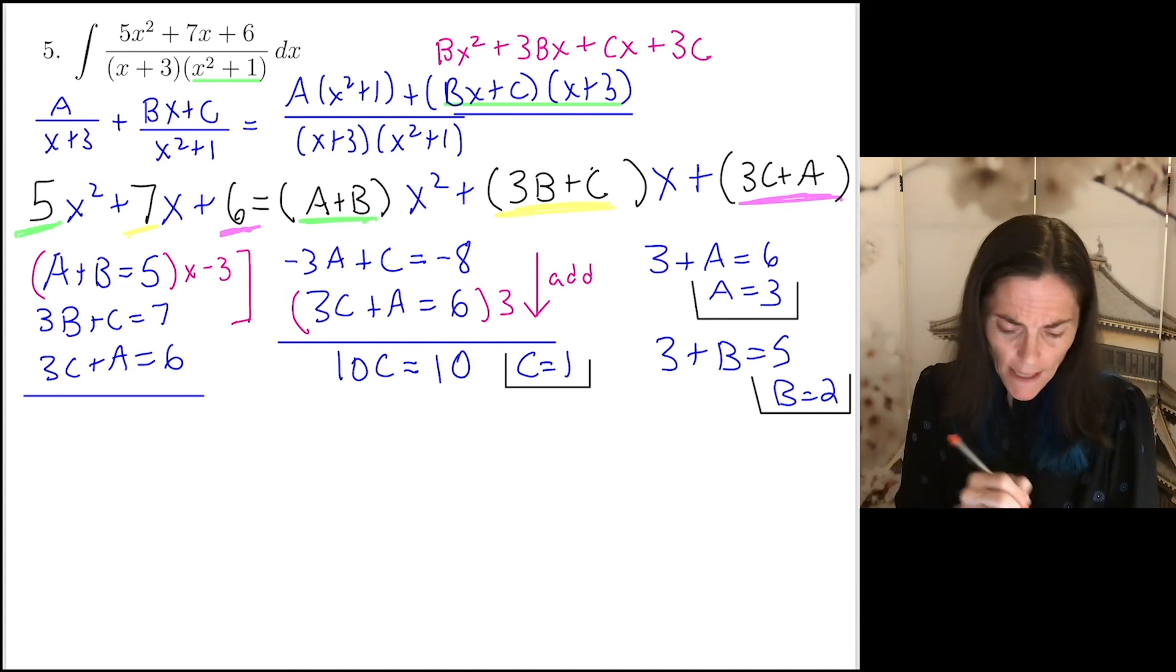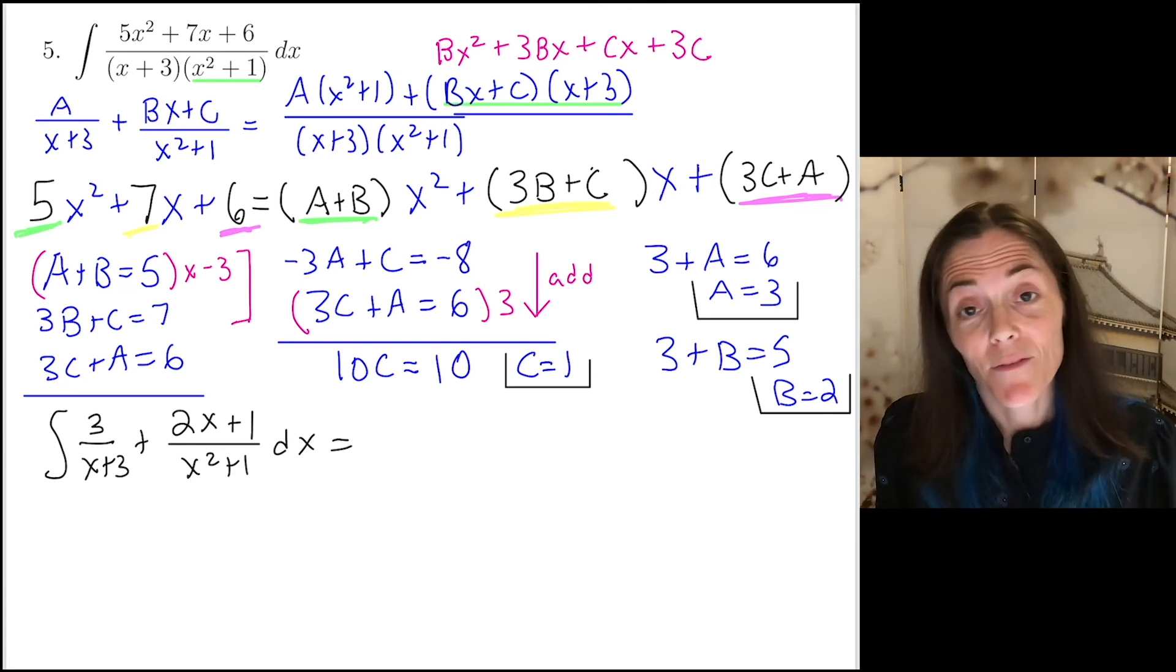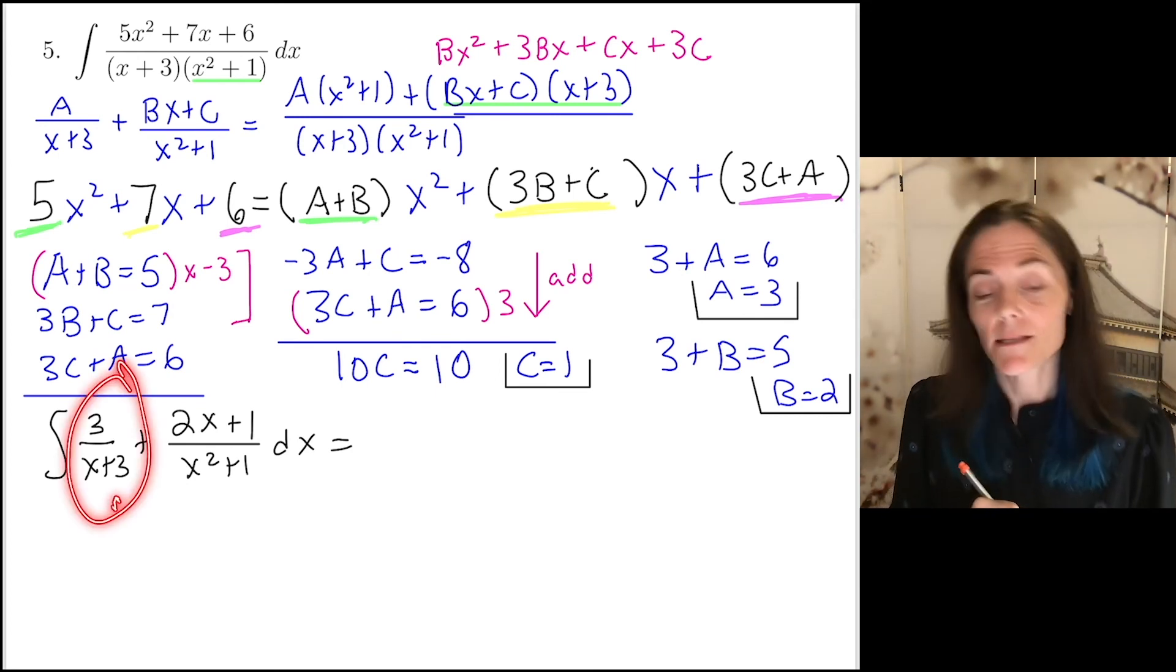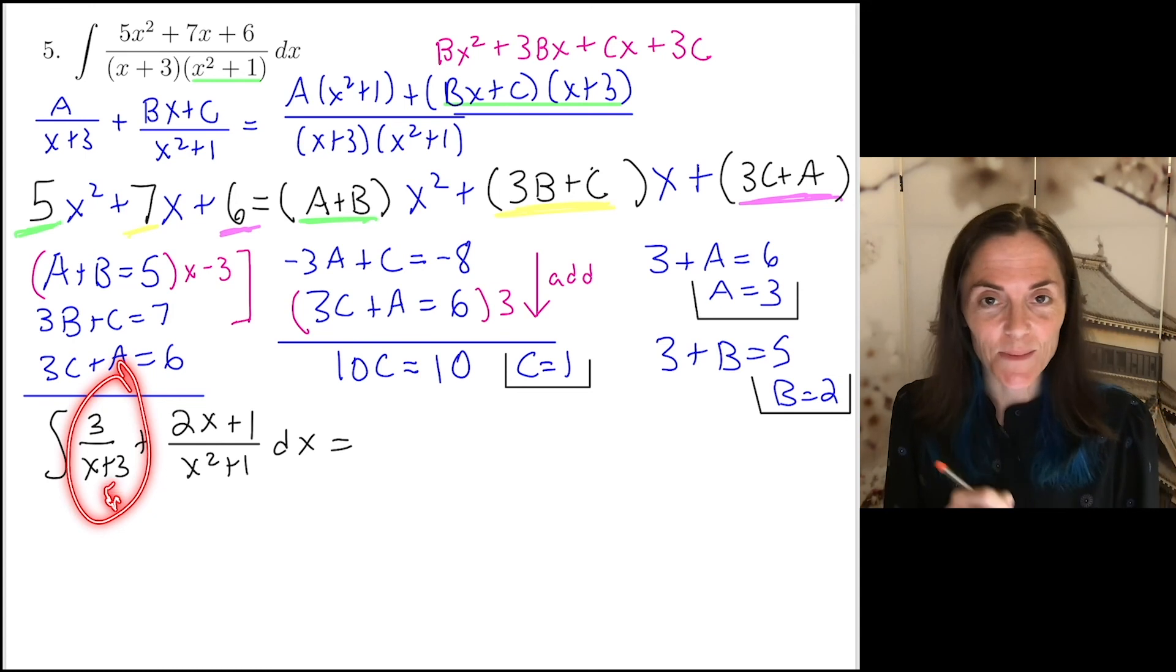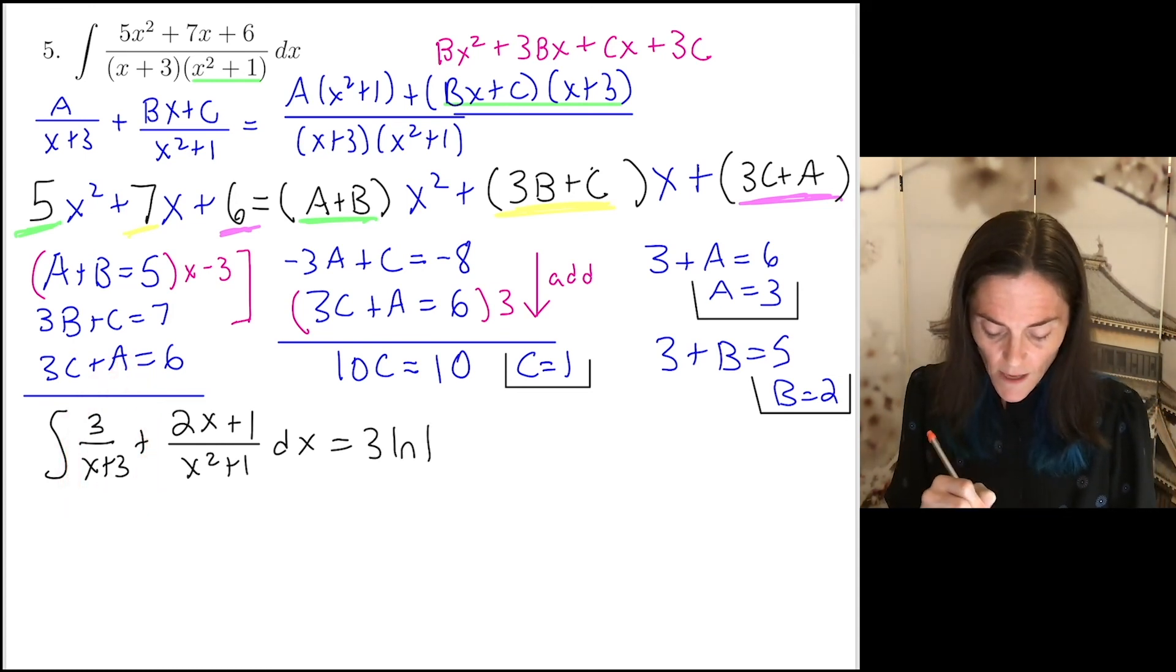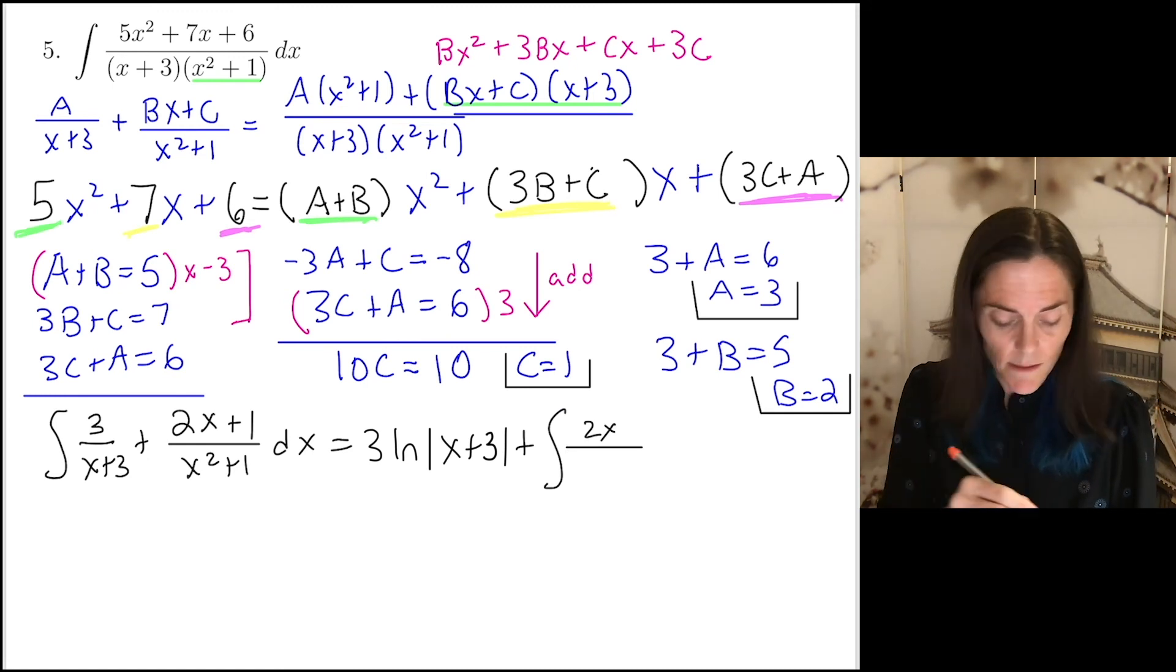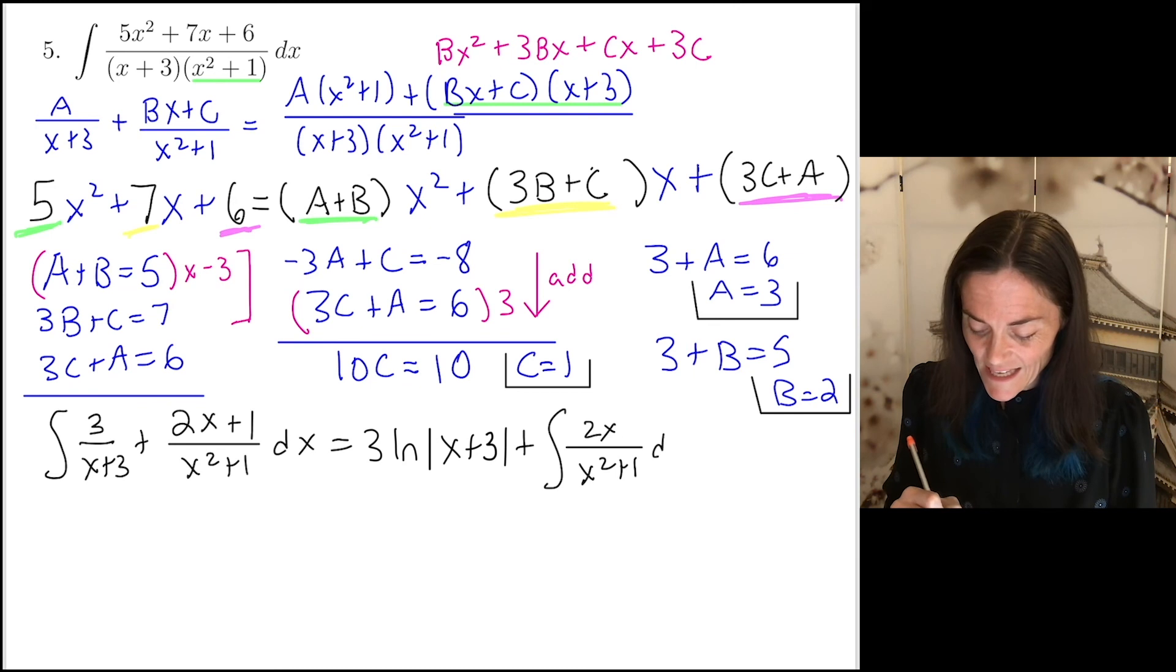So now we can integrate. We're ready. Maybe I'll switch to black for the integration. We have a over x plus 3 and then we have bx plus c over x squared plus 1, dx. Well, I will break this into a sum of three integrals. In fact, this first one, maybe I'll go ahead and integrate because this is just 3 times ln absolute value x plus 3. So we have 3 ln absolute value x plus 3. But then I will break this one into a sum. We have 2x over x squared plus 1, dx. And then the integral of 1 over x squared plus 1, dx.